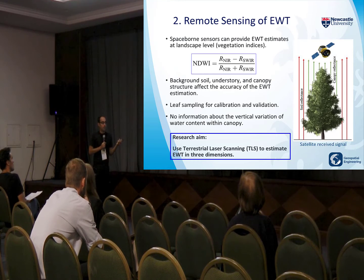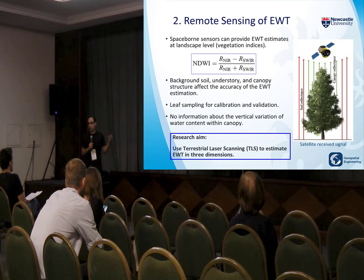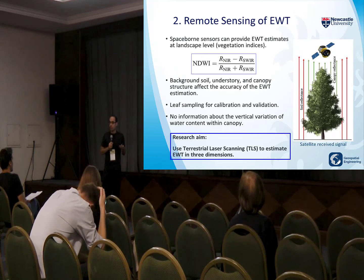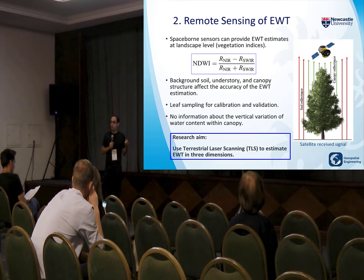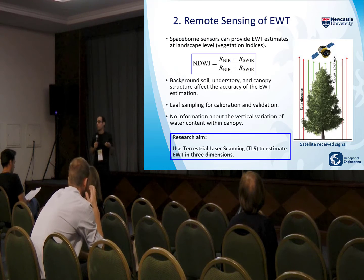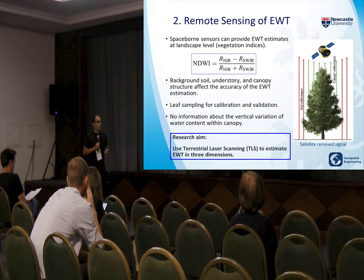The problem is that with spaceborne sensors we can only see the canopy top of the forest. We cannot get enough information about the lower canopy or about the vertical variation of water content in the canopy. We also need to collect many leaf samples from the canopy top from many sampling plots that match the pixel size of the satellite in order to calibrate and validate the estimation.